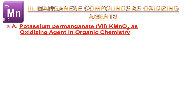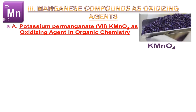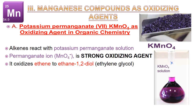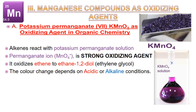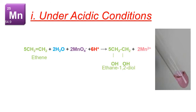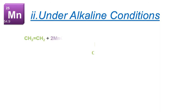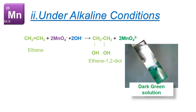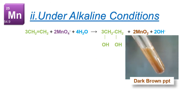Permanganate as an oxidizing agent in organic chemistry: Alkenes react with potassium permanganate solution. The permanganate ion is a strong oxidizing agent and oxidizes ethene to ethane-1,2-diol. Under acidic conditions, ethene reacts with permanganate solution to produce ethane-1,2-diol and reduces manganese +7 to manganese +2, producing a very faint pink color. Under alkaline conditions, ethene reacts with permanganate solution to produce ethane-1,2-diol and manganate ions, giving a dark green solution, which further produces dark brown precipitates of manganese dioxide, reducing manganese +7 to +4.